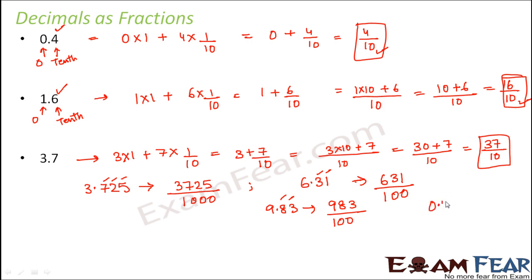How about 0.3? You will write it as 3 divided by 10, because there is only one digit after the decimal point.